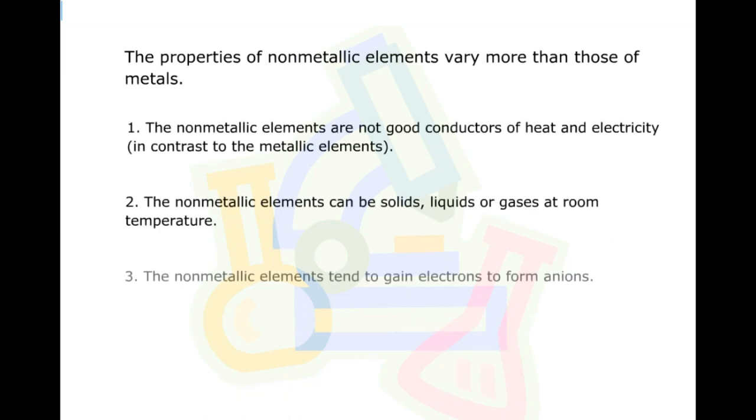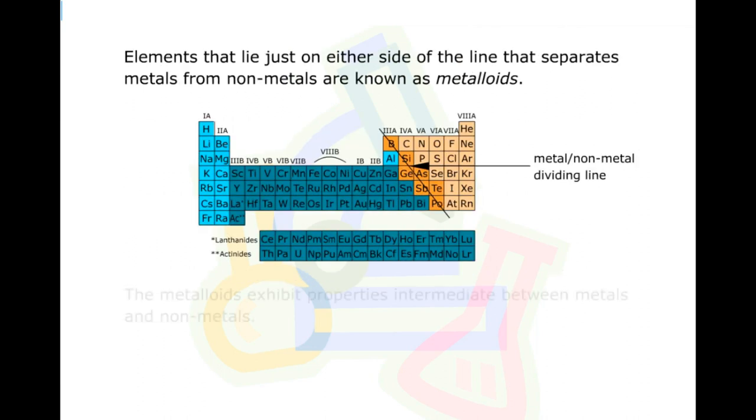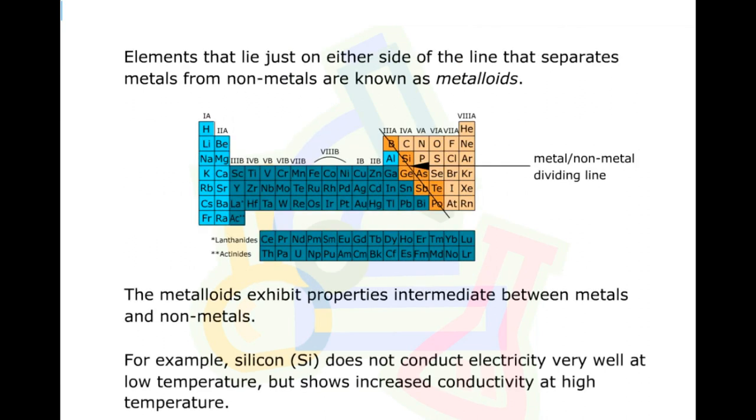The properties of non-metallic elements vary more than those of metals. The non-metallic elements are not good conductors of heat and electricity. The non-metallic elements can be solids, liquids, or gases at room temperature. The non-metallic elements tend to gain electrons to form anions. Elements that lie just on either side of the line that separates metals from non-metals are known as metalloids.